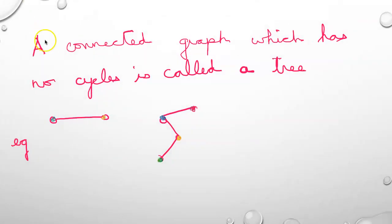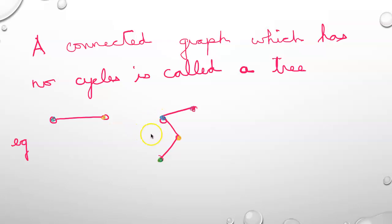A connected graph which has no cycles is called a tree. These are examples of trees. There are no cycles and this is connected. There are two trees shown here.